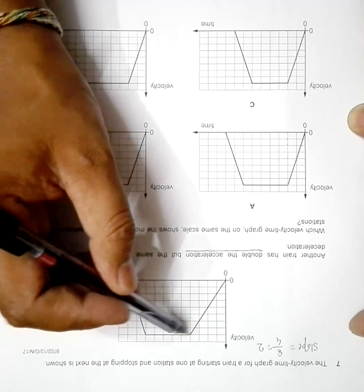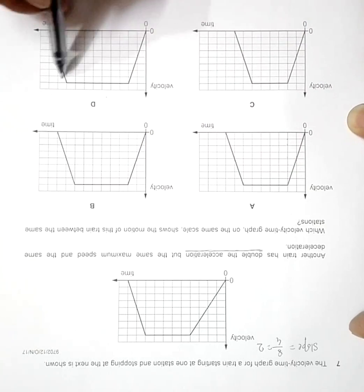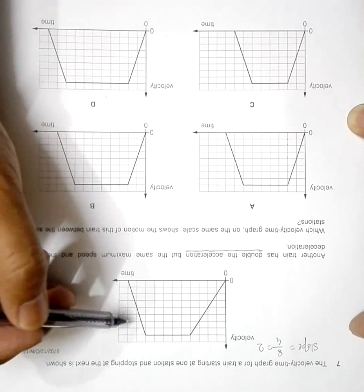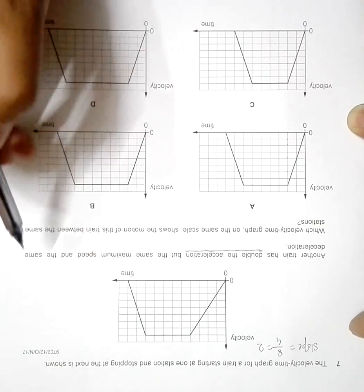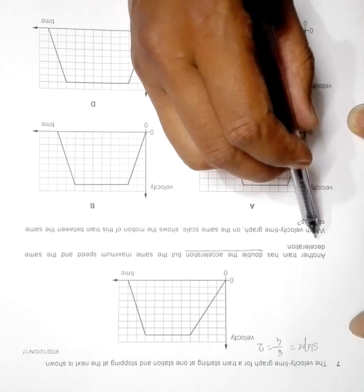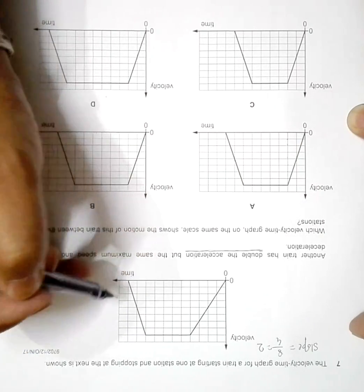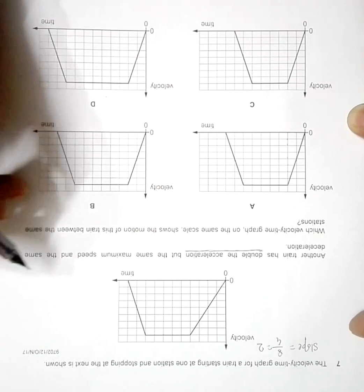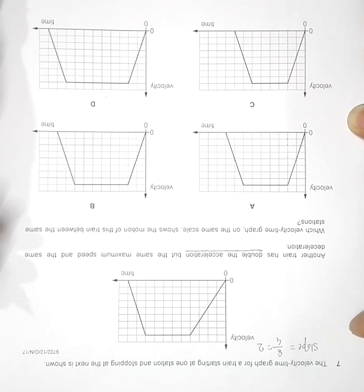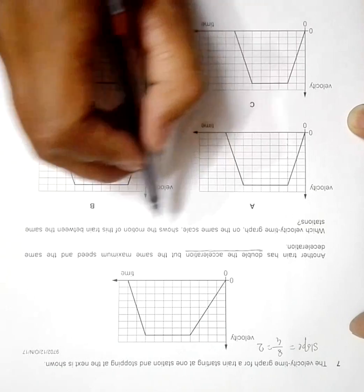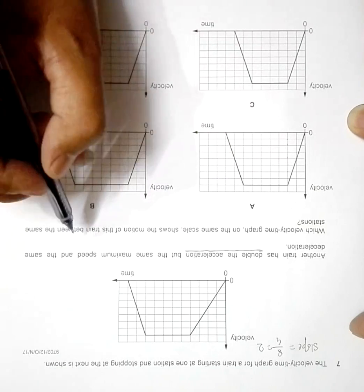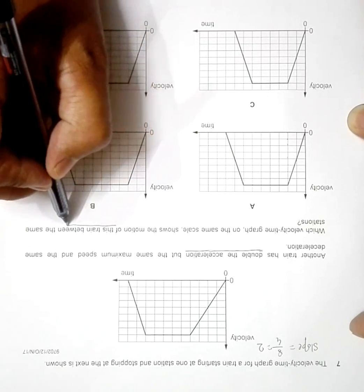Then if we look here, the maximum speed is constant, so everywhere it is constant. Everything qualifies. And here we've got the same retardation, same deceleration, so slope should be same. If you look at all of these, the slope is same. Then what's the difference?